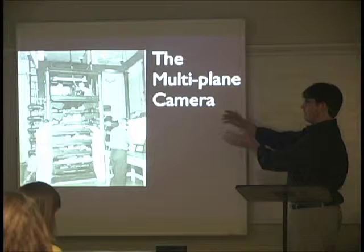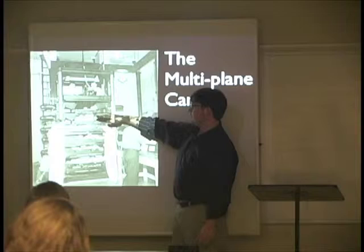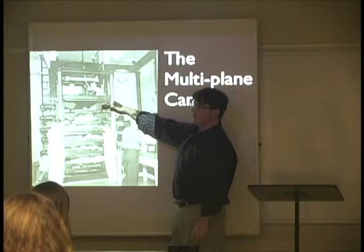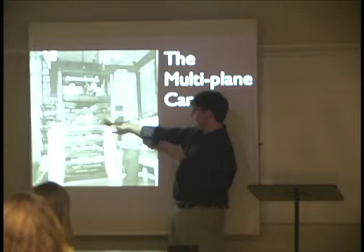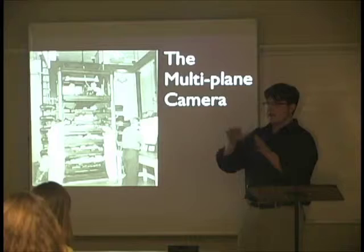I'm going to be talking about the multi-plane camera. The camera is placed facing down, and these are different panes of glass that are inserted with animation on it. The closer panes have specific parts that are in the foreground painted on them, and then all the way through the back you get the very background elements. The idea is that it adds depth to something that's just 2D drawings.